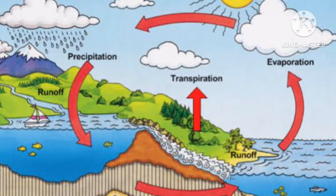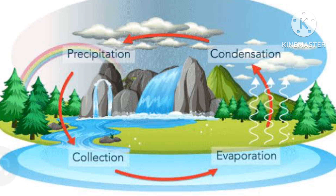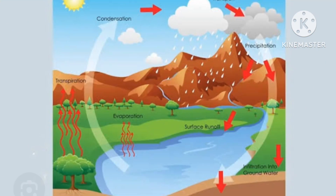Liquid water evaporates into water vapor, condenses to form clouds, and precipitates back to the earth in the form of rain and snow. Today I am showing you two different diagrams of the water cycle — one is a little bit complicated and another is a little bit easier, but both you can draw in an exam paper for good marks.